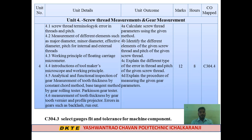Topic 4.5 is analytical and functional inspection of gear measurement of tooth thickness. If a gear component is used in manufacturing, there will be inspection problems. Inspection is divided into analytical inspection and functional inspection. The inspection methods for tooth thickness include the constant chord method, base tangent method, and gear rolling tester method. The instrument Parkinson gear tester is important from an exam point of view, covering construction, working, and advantages.